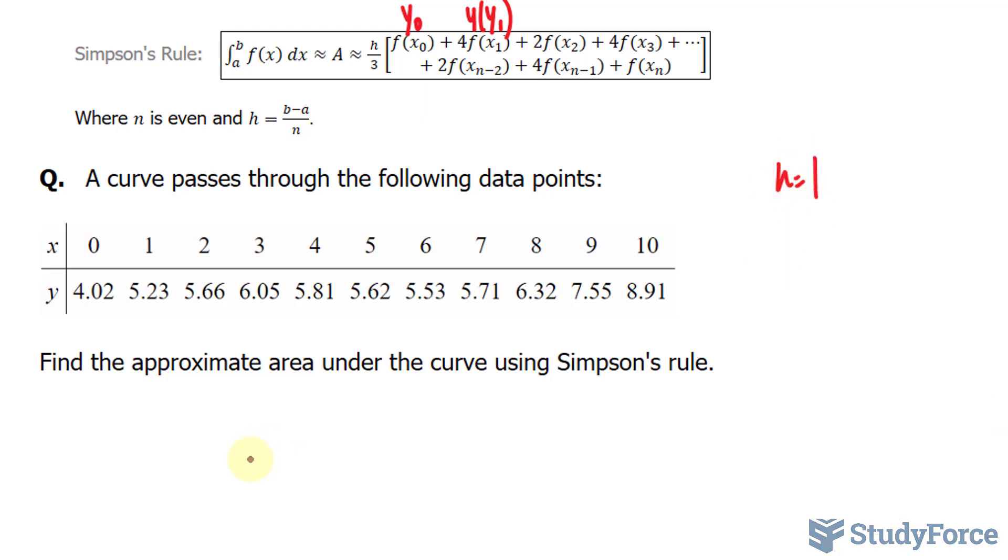The area is approximately 1/3 times - and this is where we have to do some arithmetic. We have 4.02 plus 4 times the next observation 5.23, plus 2 times 5.66. This is the interesting part about this.